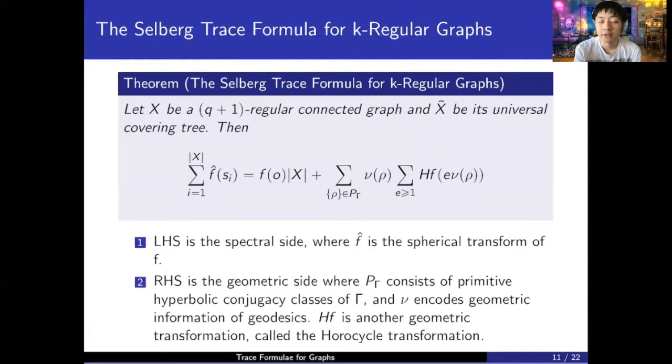So the Selberg trace formula for K regular graphs states that if X is Q plus 1 regular connected graph and X tilde is its universal covering tree, then the left hand side is equal to the right hand side. So the left hand side is the spectral side. F hat is the spherical transform of F. And the right hand side is more complicated where P gamma is the set of all primitive hyperbolic conjugacy classes of gamma. And nu encodes geometric information of the geodesics. And HF is another geometric transformation called the horocycle transformation. So all these concepts are hard to explain without knowing a lot of information about the K regular trees. And the important thing is that this is an example of the trace formula for K regular graphs. And later, Dax will continue talking on spectral graph theory.